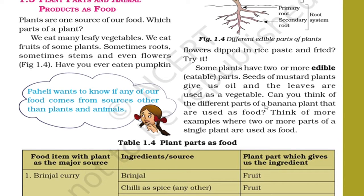Can you think of the different parts of a banana plant that are used as food? The fruit part is eaten and its stem part is also eaten by us. Stem of banana is high in fiber and can aid in the treatment of ulcers. Think of more examples where two or more parts of a single plant are used as food.